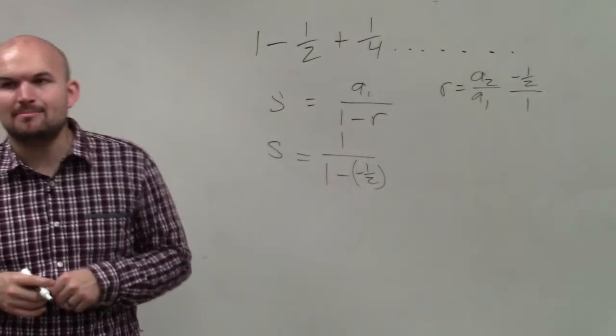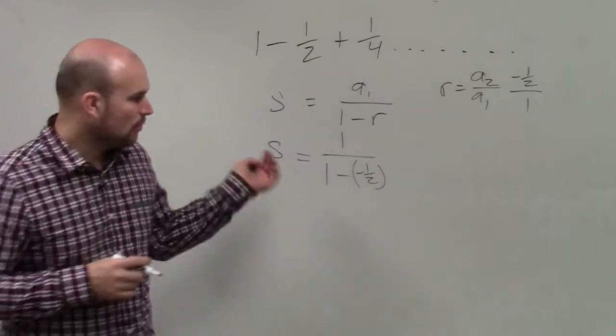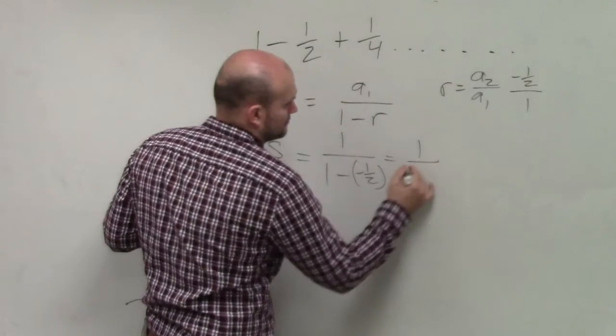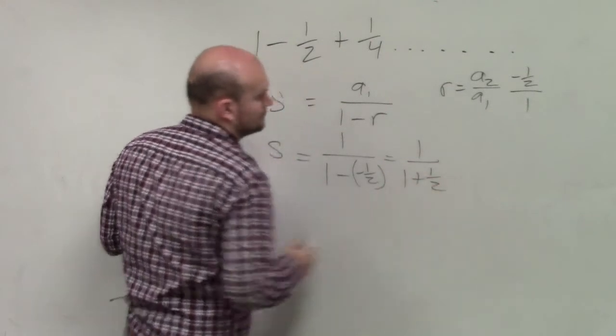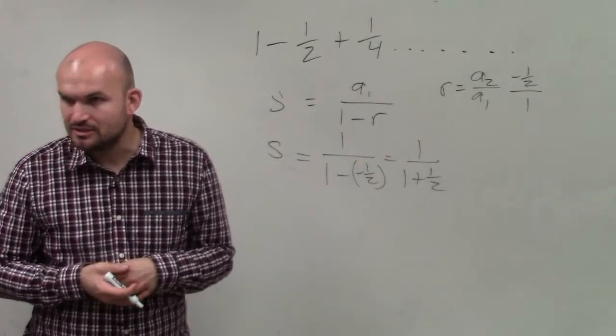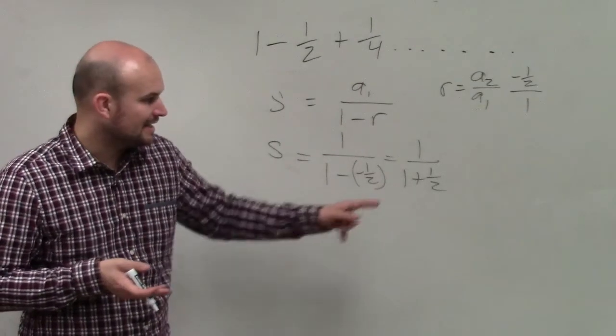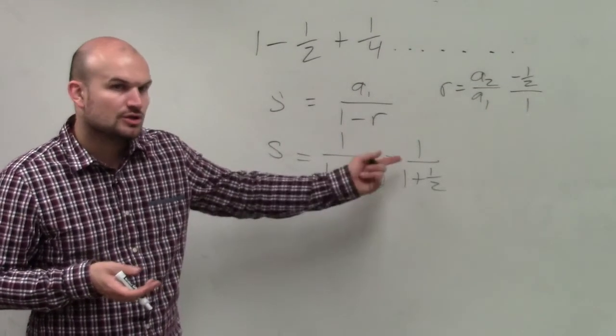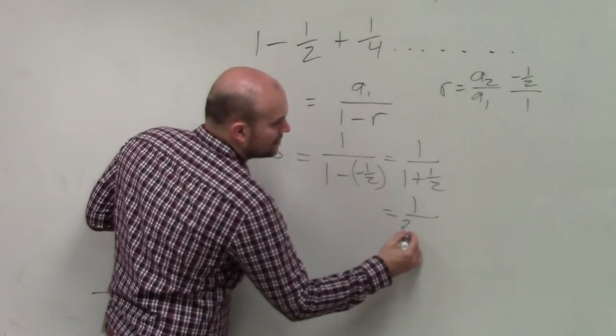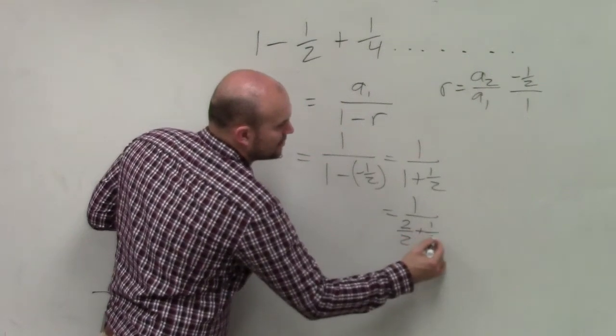So now I have 1 minus negative 1 half, which is like 1 plus 1 half, right? Now, how do you add a whole number to a fraction? The best thing to do, ladies and gentlemen, is to convert your whole number to a fraction with the same denominator. So I'll write that as 2 over 2 plus 1 half.